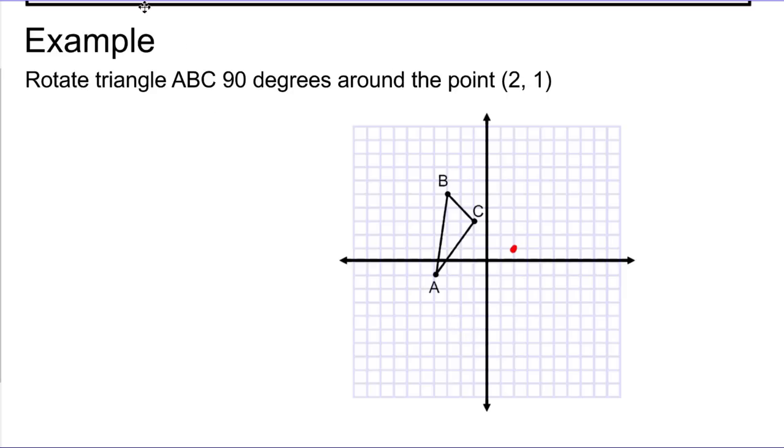And so here's what we're going to do. Let's pull our points off of the graph so we know what we're working with. It looks like I have an A value of (-4, -1). I have a B value of (-3, 5).